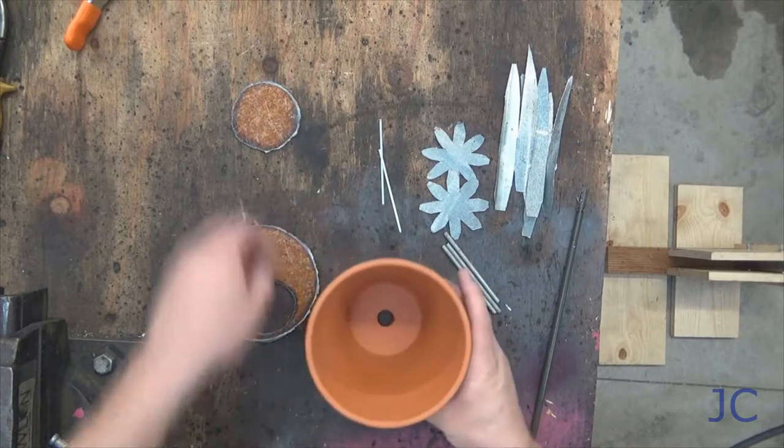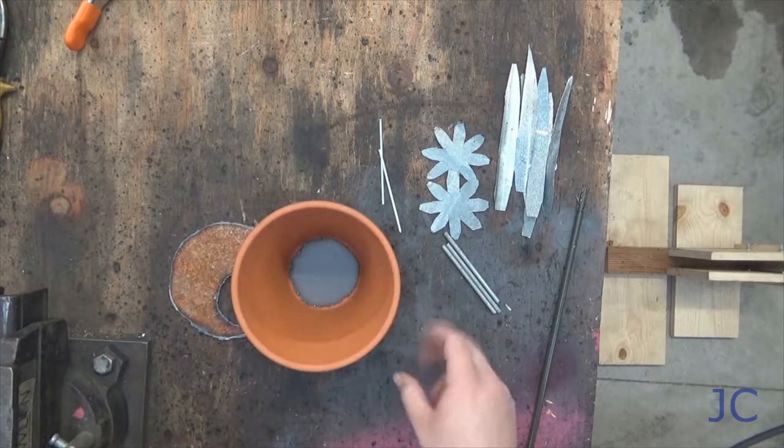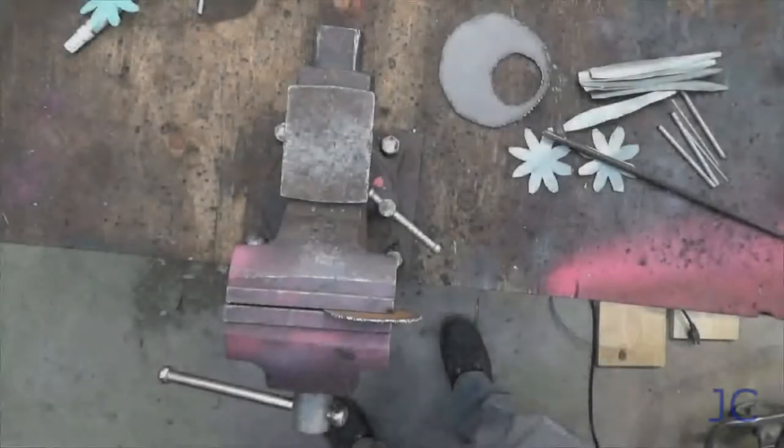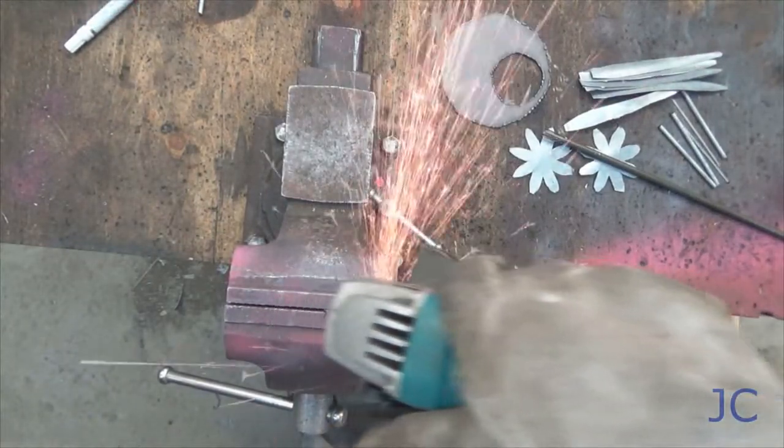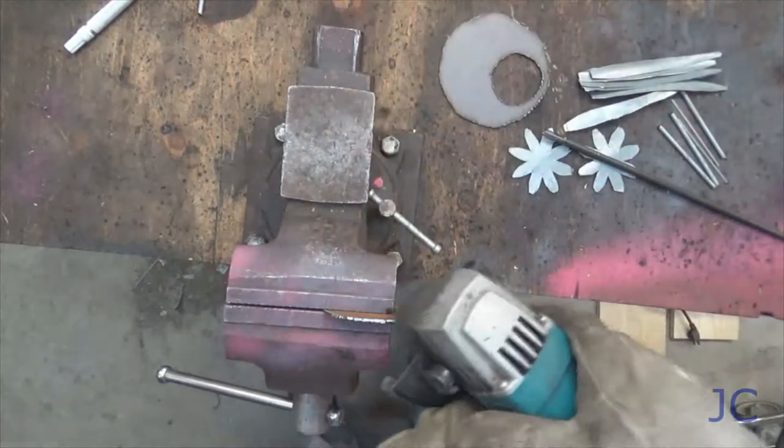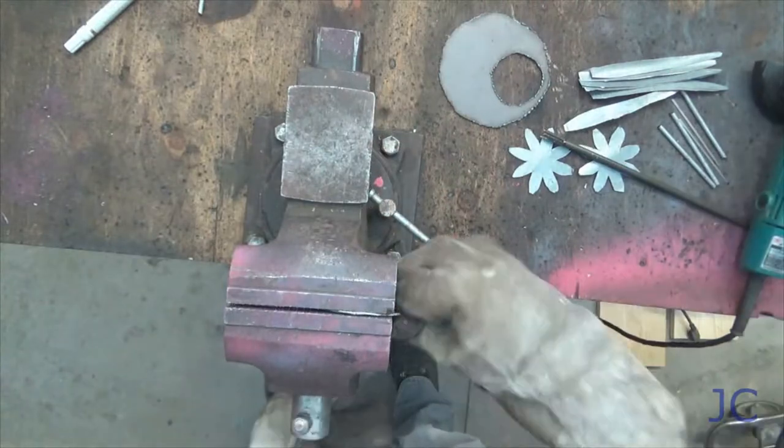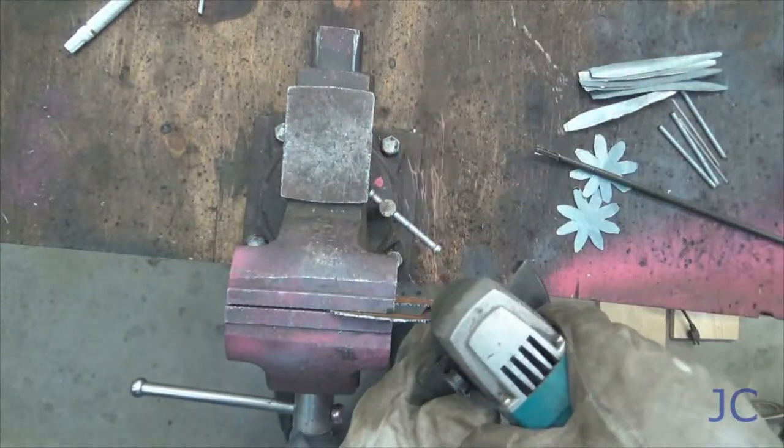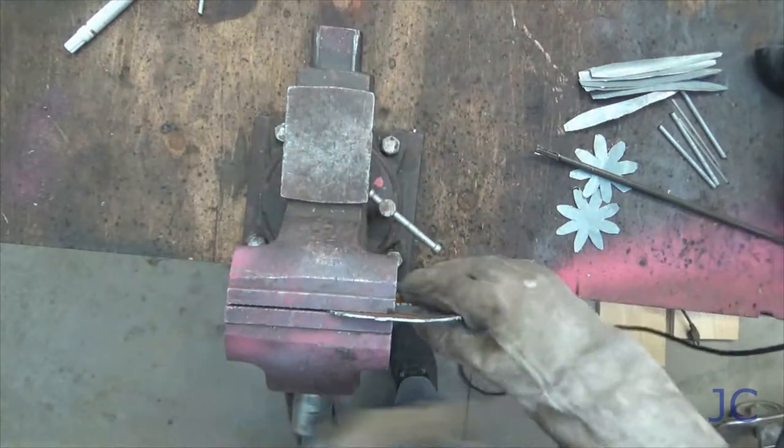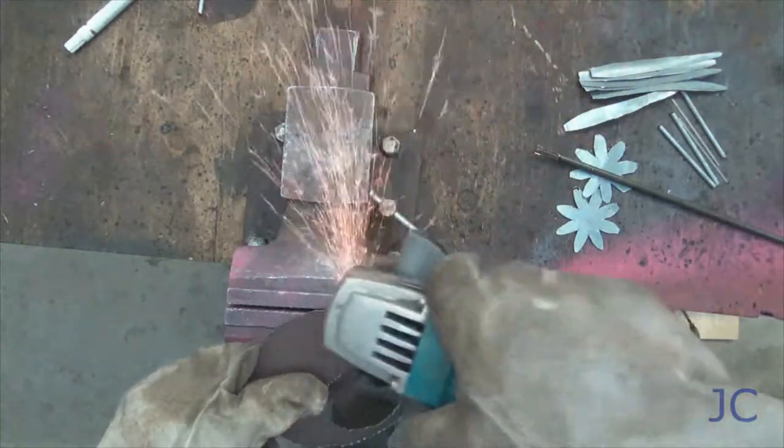Now everything's cut and seems to fit good so it's on to grinding and sanding to smooth everything out. I'm just going to use an angle grinder to take the rough edges off of these round plates that we cut. You'll notice that I'm wearing a set of heavy gloves. I also have eye protection while I'm doing this. Please use safety equipment boys and girls.